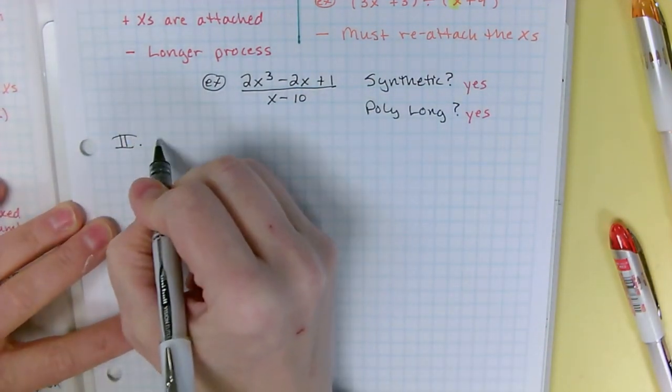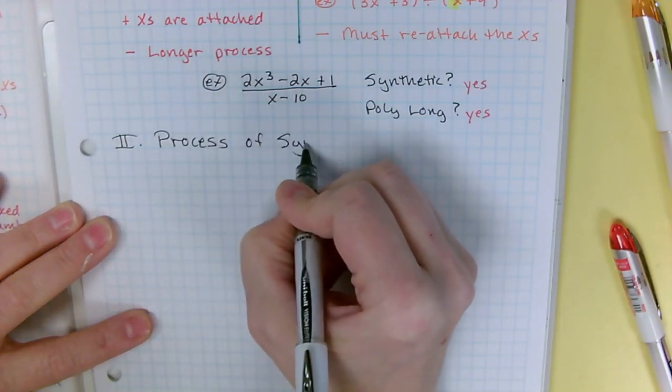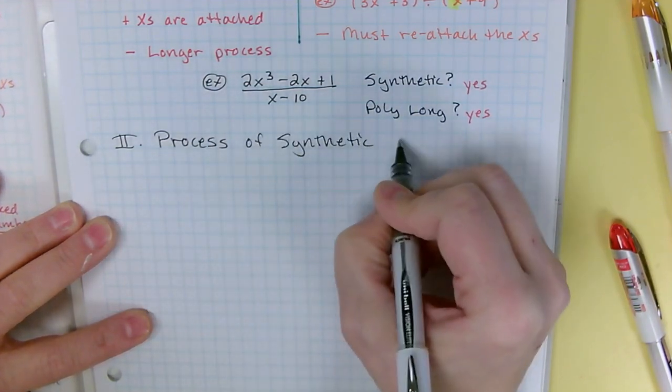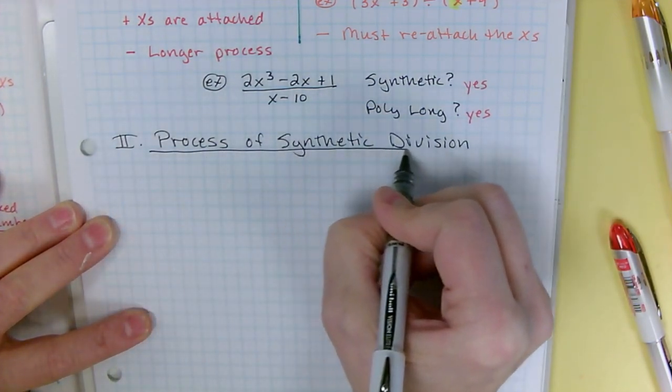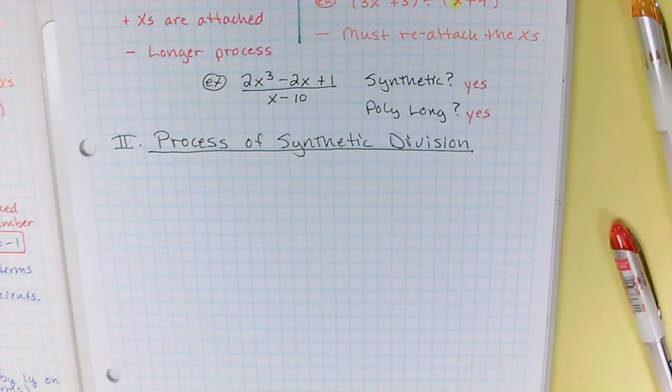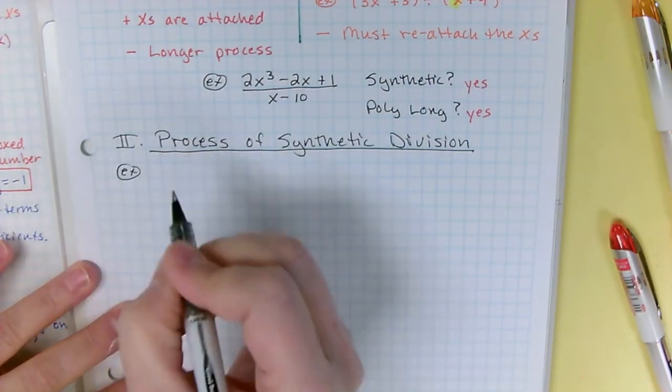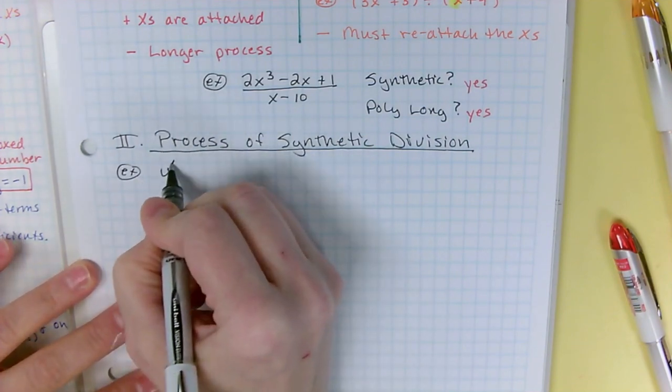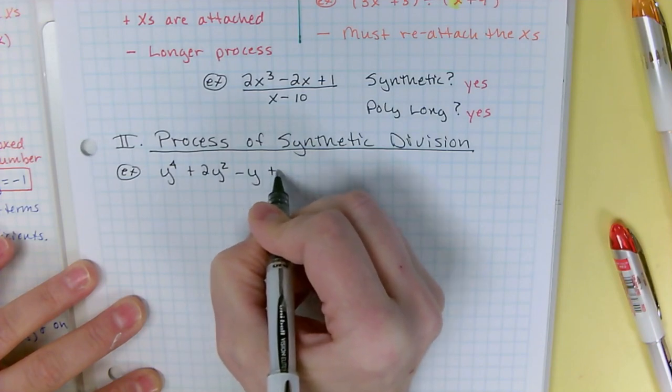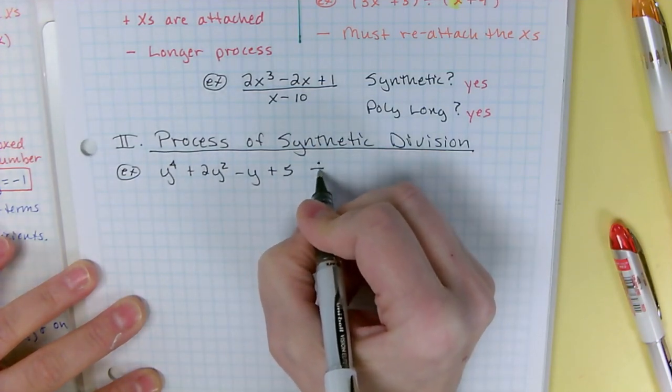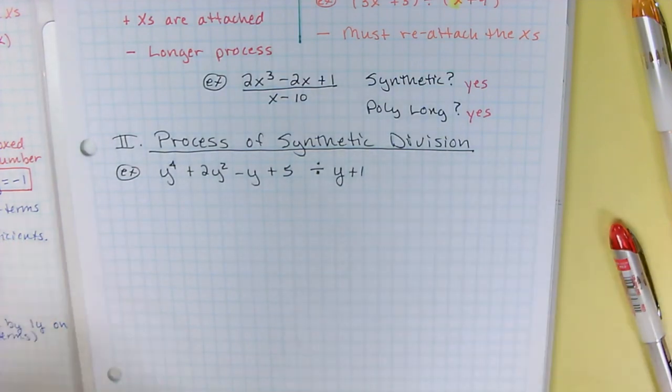Okay, Roman numeral two, the process of synthetic division. Process of synthetic division. Okay, so here's our example. We're going to do y⁴ + 2y² - y + 5 is divided by y + 1.